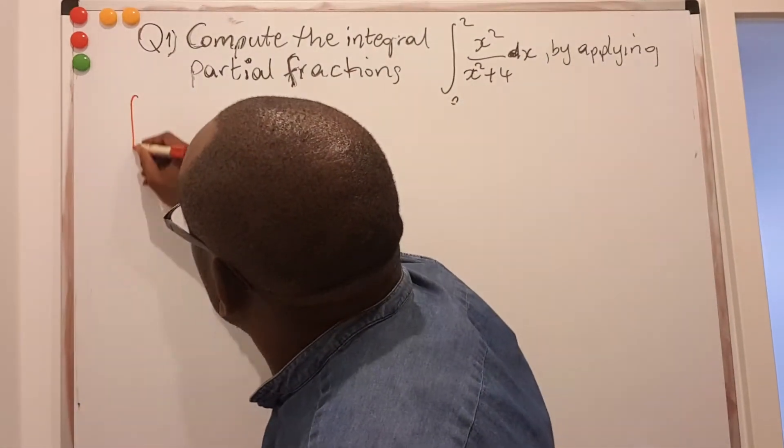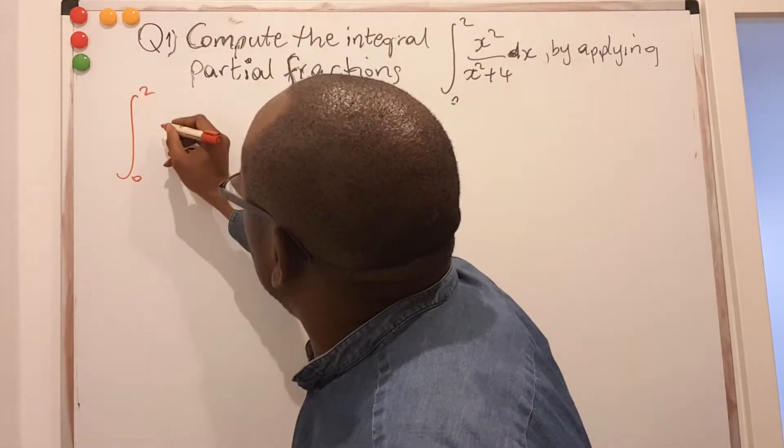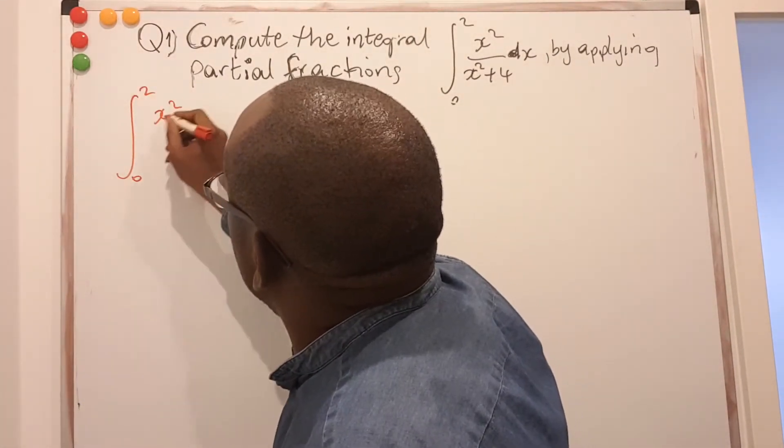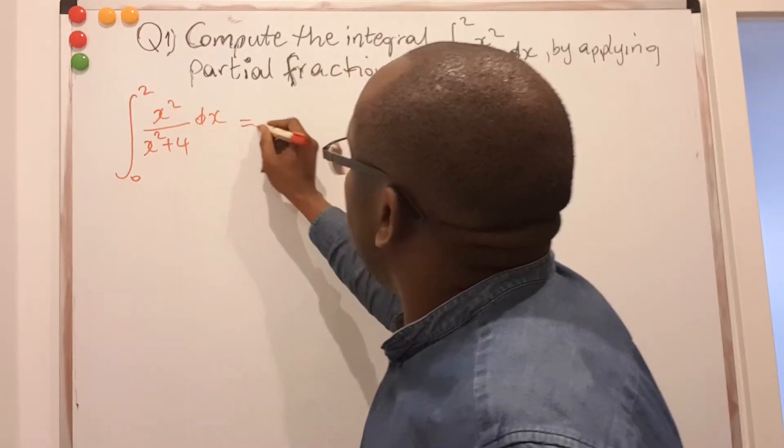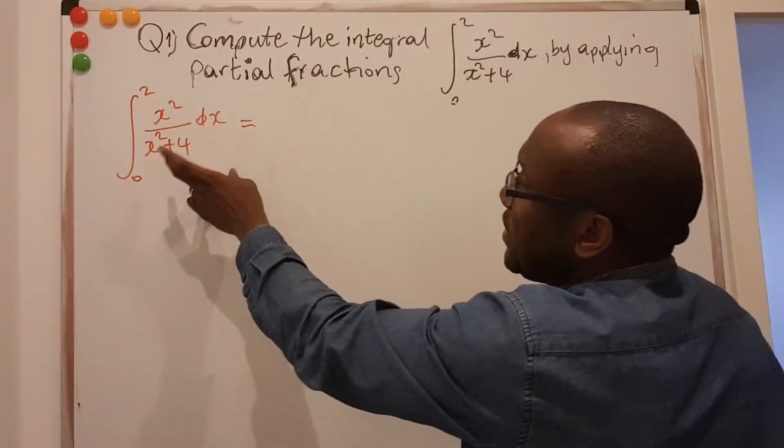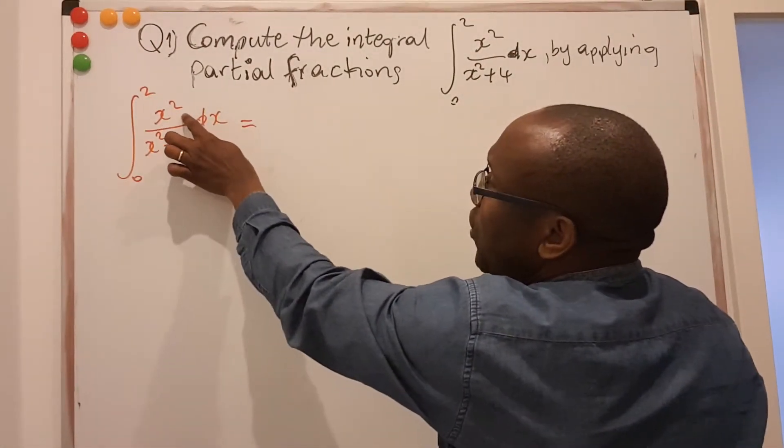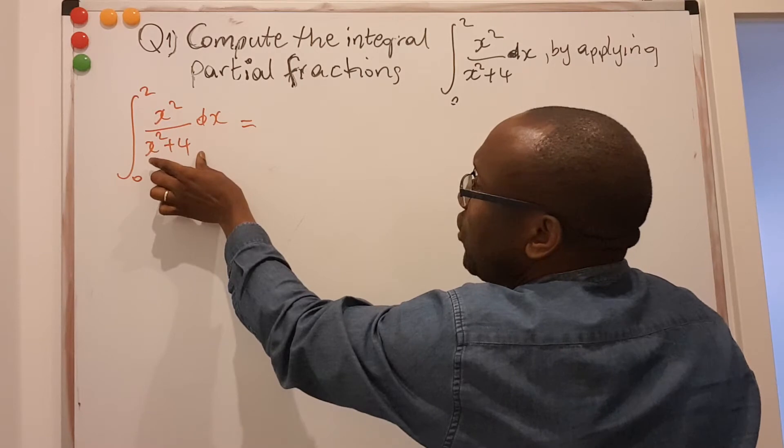So I have to integrate from 0 to 2, x squared divided by x squared plus 4 dx. What you notice here is, if I look at the function of the numerator, it's of degree 2, the denominator is also degree 2.